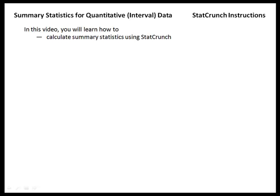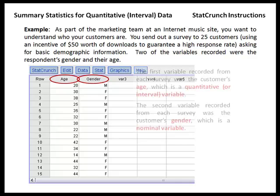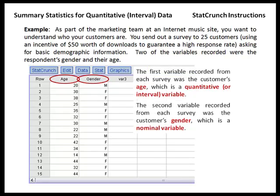In this video, we'll consider how to calculate summary statistics using StatCrunch. We're going to use the same example that we looked at when creating a histogram. We'd like to calculate summary statistics for the quantitative variable of age, which was one of the demographic characteristics that was considered.